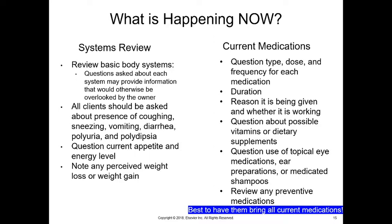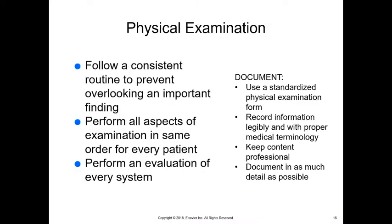We'll talk about taking a body condition score on the pet every time they come in. Weight is somewhat subjective based on breed, but a body condition score never lies — it's kind of like a BMI in a person. For current medications, we need to know type, dose, and frequency. It's always best to have them bring in their current medications. We also want to know about supplements, vitamins, topical medications, medicated shampoos, ear medications, and all preventive medications including heartworm and flea products.